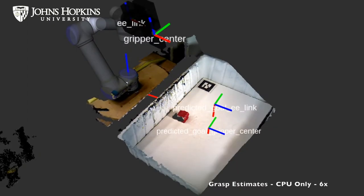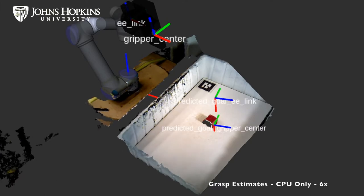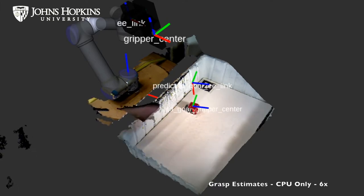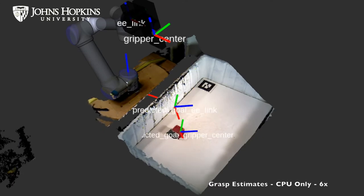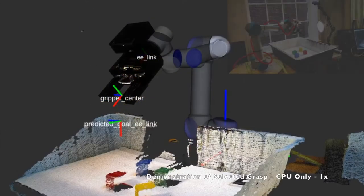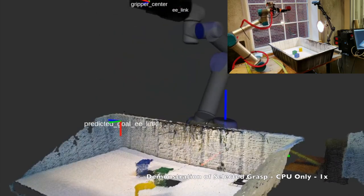You can also see grasp positions update as the block is moved around the scene. Estimate updates occur about once every 4 seconds and are running on the CPU. We hope future GPU-based execution will enhance performance dramatically so that multiple updates can be made as the robot approaches a goal.